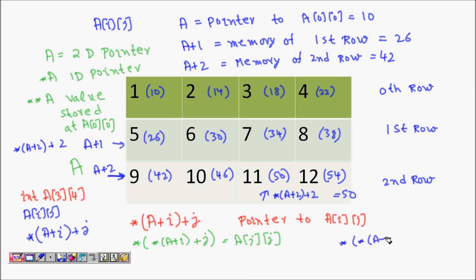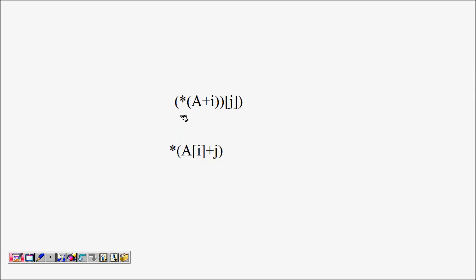So the main idea is: a[i][j] can be represented as star(star(a+i)+j). Star(a+i) gives the pointer to the ith row, plus j goes to the jth element in that row, and dereferencing gives the value a[i][j].